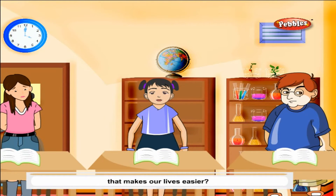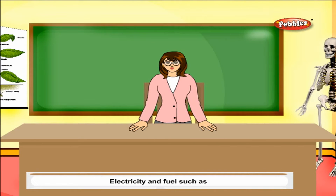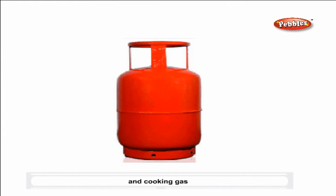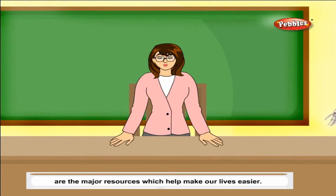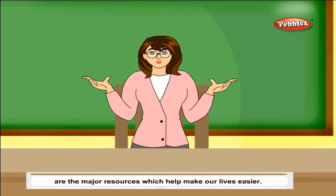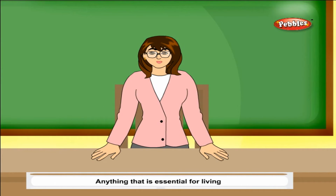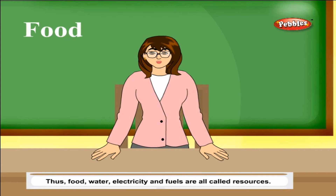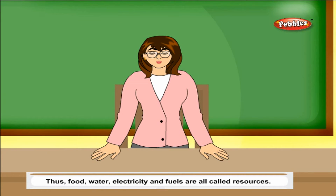Can you think of something that makes our lives easier? Electricity and fuel, such as petrol and cooking gas, are the major resources which help make our lives easier. Anything that is essential for living or which makes our lives easier is called a resource. Thus, food, water, electricity, and fuels are all called resources.